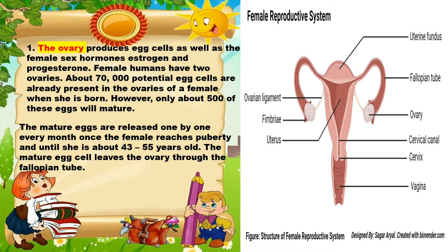However, only about 500 of these eggs will mature. The mature eggs are released one by one every month once the female reaches puberty and until she is about 43 to 55 years old. The mature egg cell leaves the ovaries through the fallopian tube.